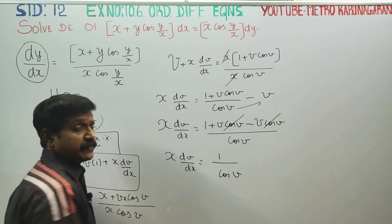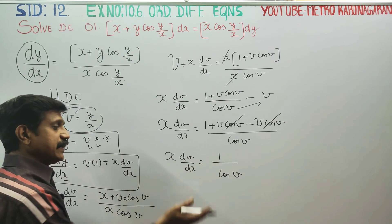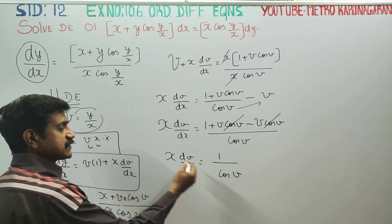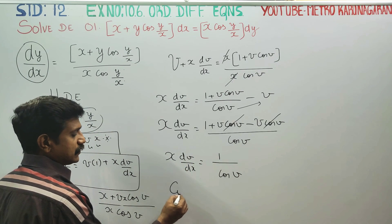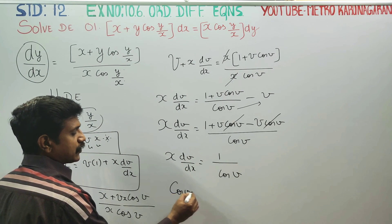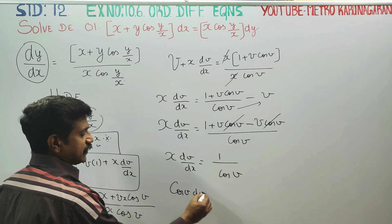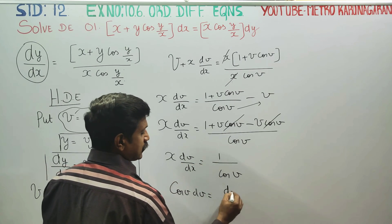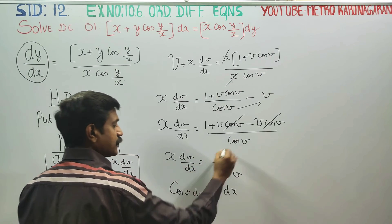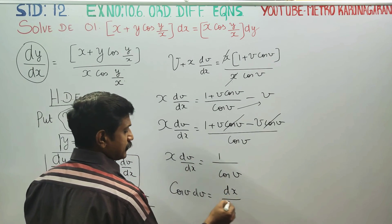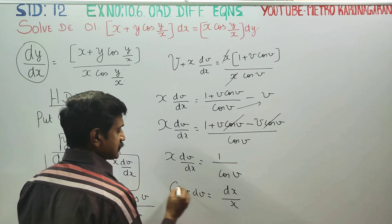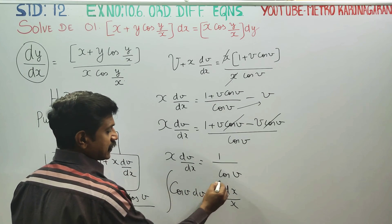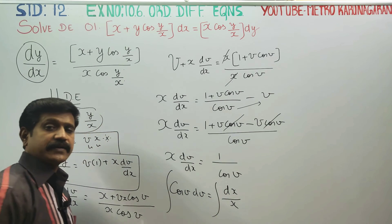Now it is variable separable. Separate variables: put v terms and cos v on one side, and x on the other side. So cos v dv is equal to dx by x. Now you can comfortably integrate both sides.